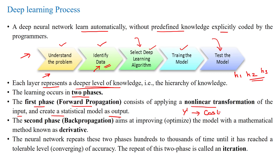After calculating the cost, we can determine whether there is more or less error. If there is more error, we go to the second phase — back propagation — to improve the model using mathematical logic such as partial derivatives and partial differentiation. The neural network repeats these two phases hundreds or thousands of times, which is called the number of iterations, until the expected output is reached. Reaching the expected output is called convergence, after which we get good accuracy for the given input images.